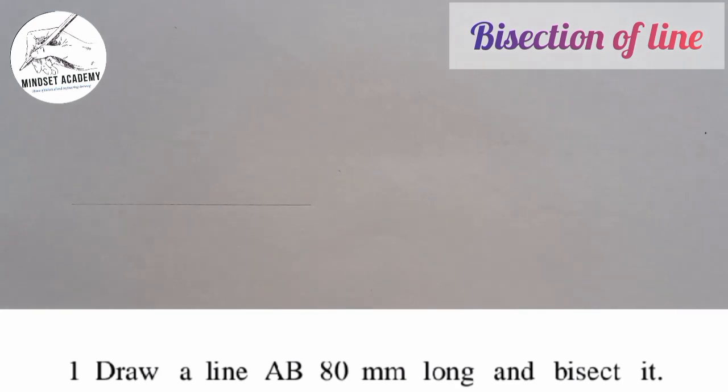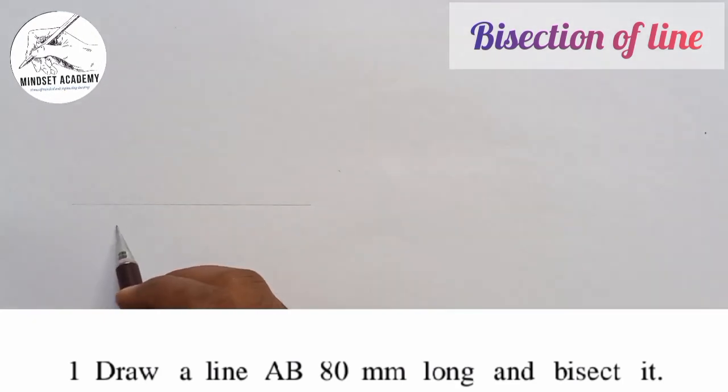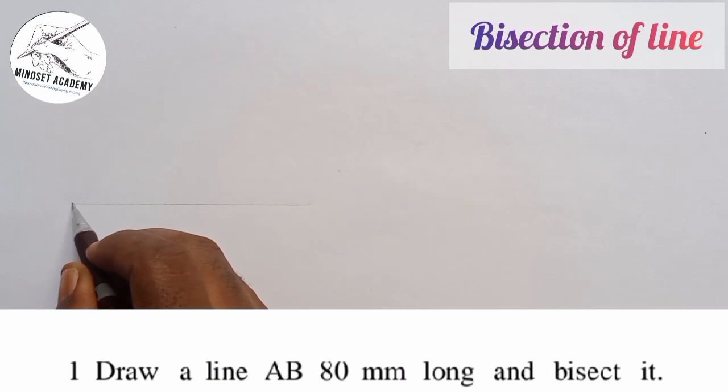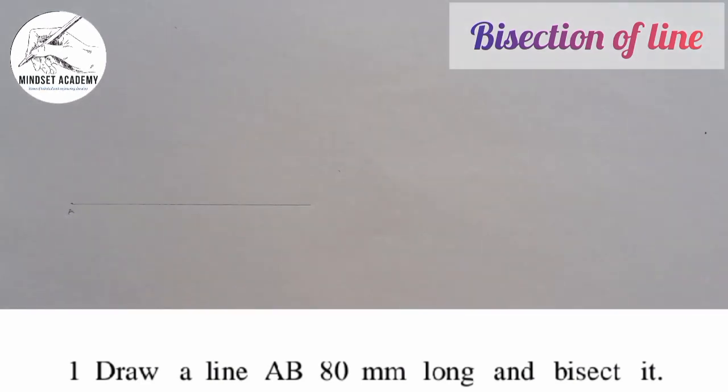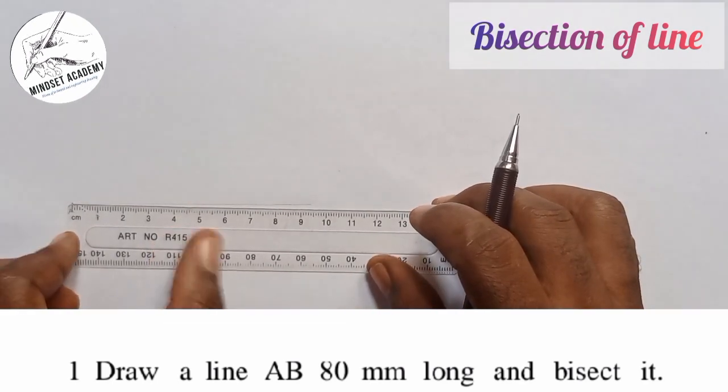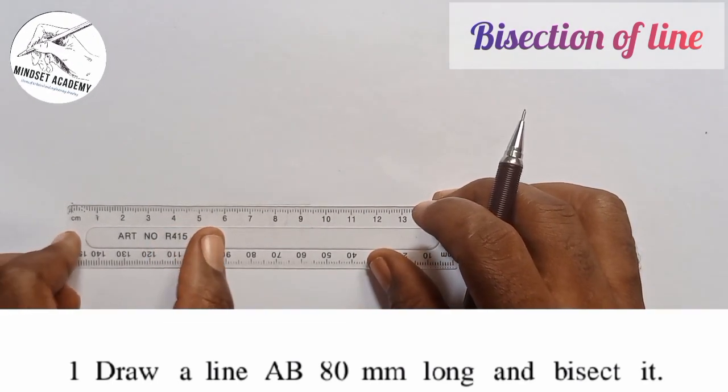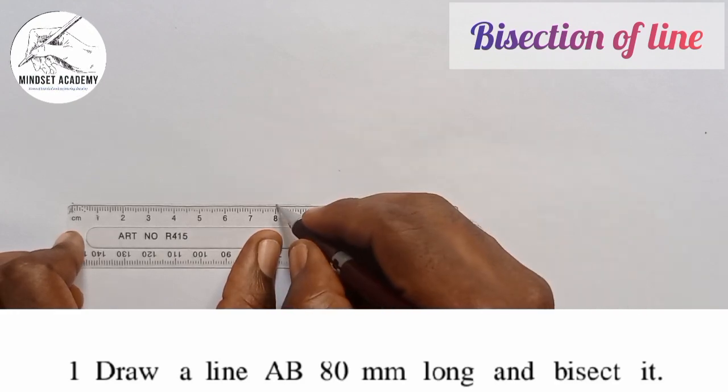On that faint line I'm going to pick a point. I'll call that point A. From point A I'm going to measure, so from A to 8 is 80.